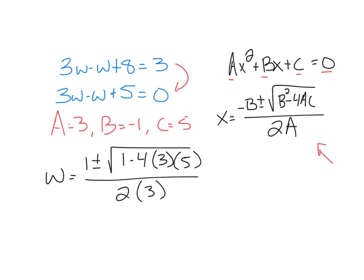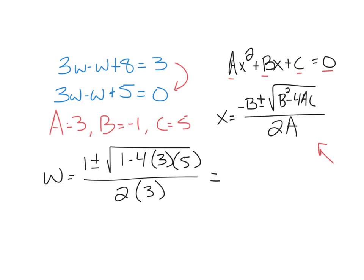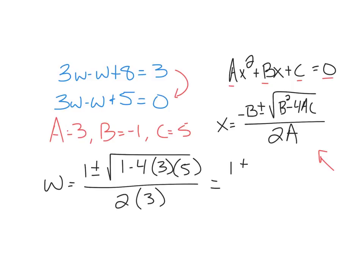So we just plug all those values in. To simplify the radical expression as much as possible, we get one plus or minus the square root. Doing all that math gives me negative fifty-nine all over six.